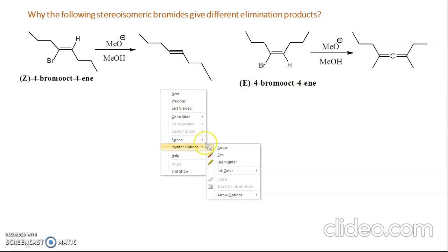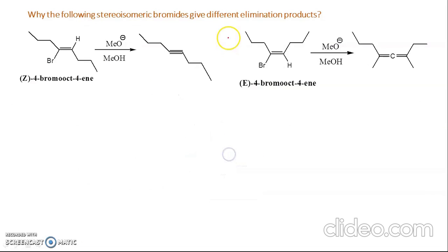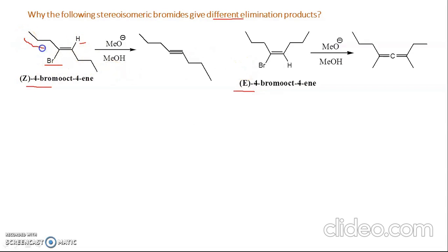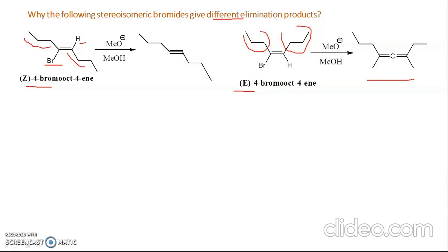Here we have two stereoisomeric dibromides giving different elimination products. The first molecule is Z and the second is E — because in the E isomer Br and H are on opposite sides and the propyl groups are also on opposite sides. From the first case we get a Z product, but from the second case we get a completely different product, which is an allene.